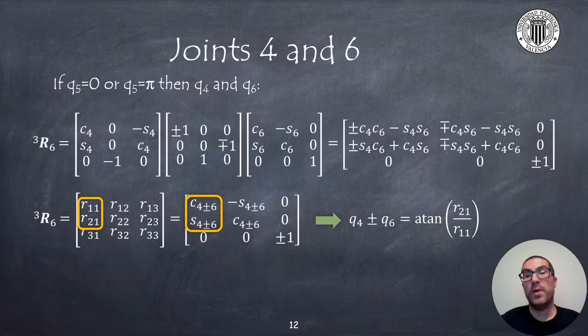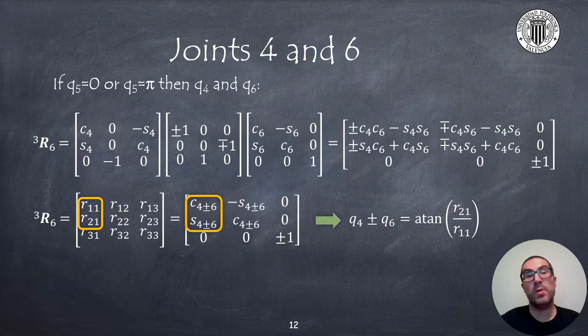In the singular configuration with Q5 equal to 0 or pi, then the symbolic expression is simplified to the point that both joints Q4 and Q6 appear with a linear relation. That means there are infinite possible combinations that satisfy the equation, which implies that we need to provide an arbitrary value for one of the joints, and then compute the reminder joint once we have provided the arbitrary value for the first one.